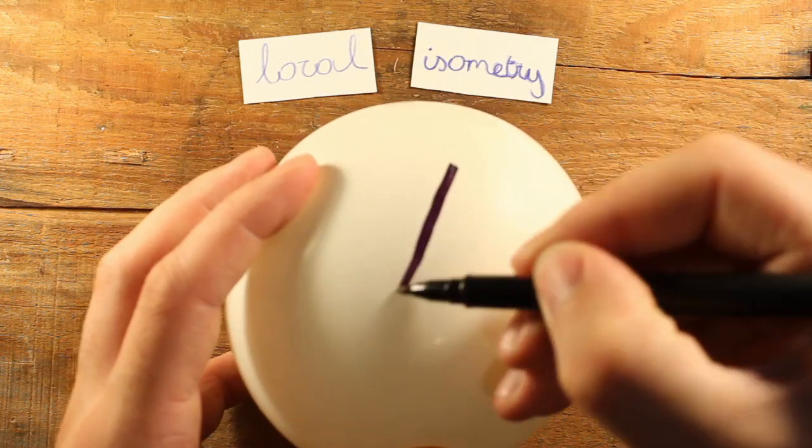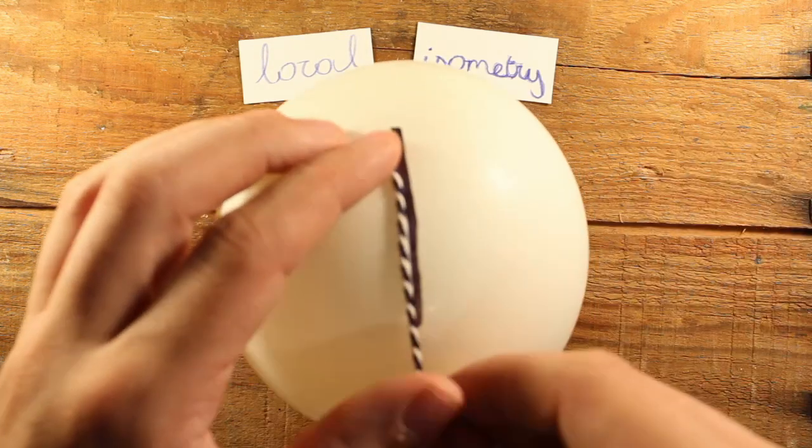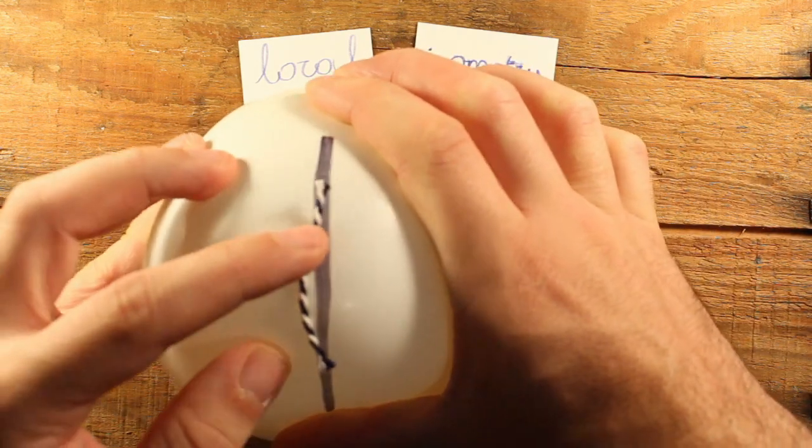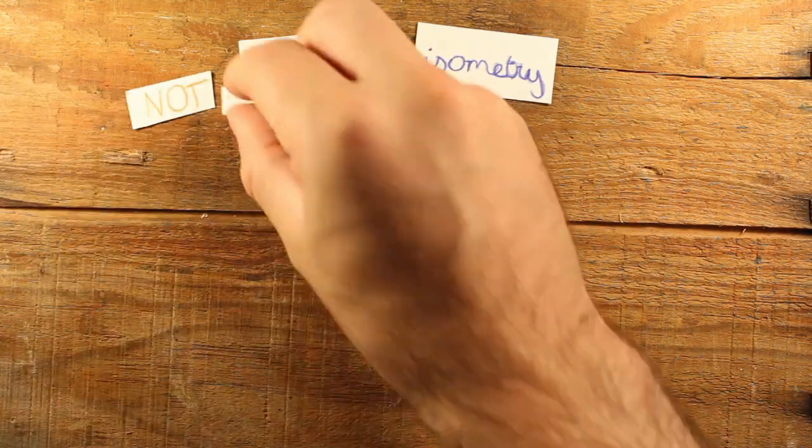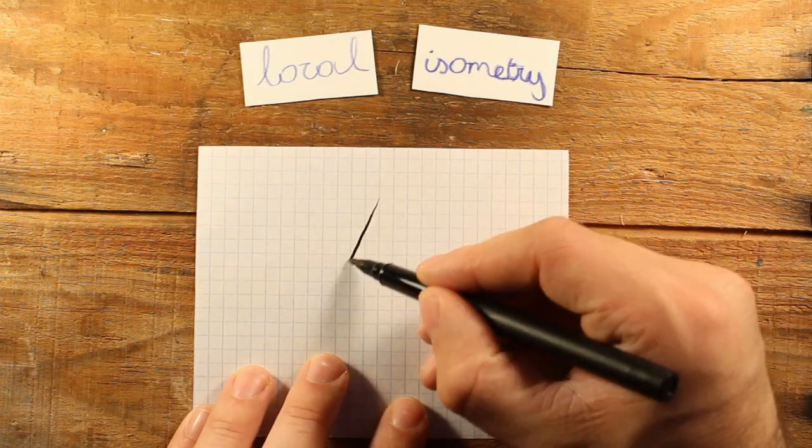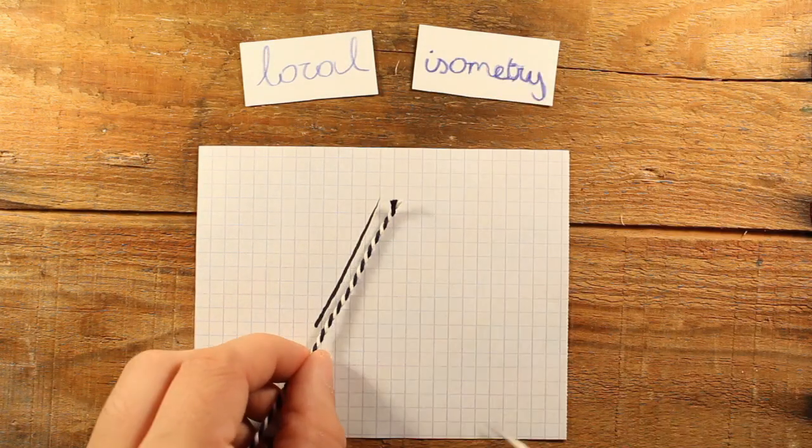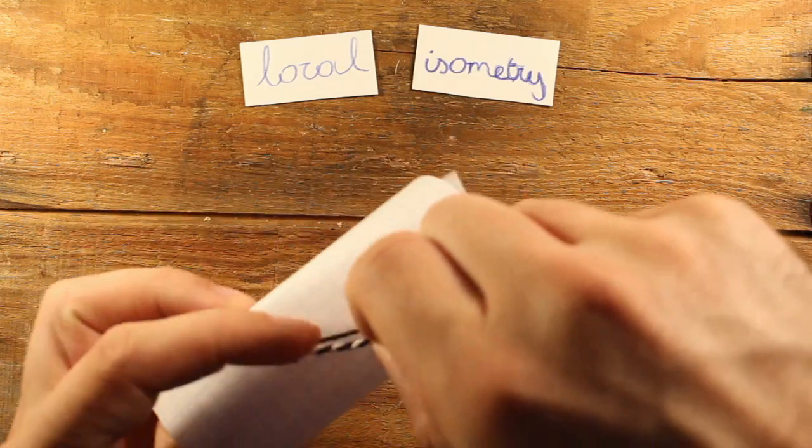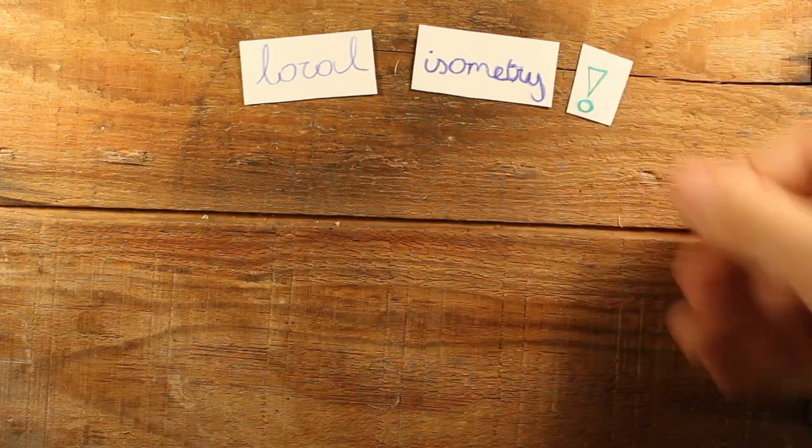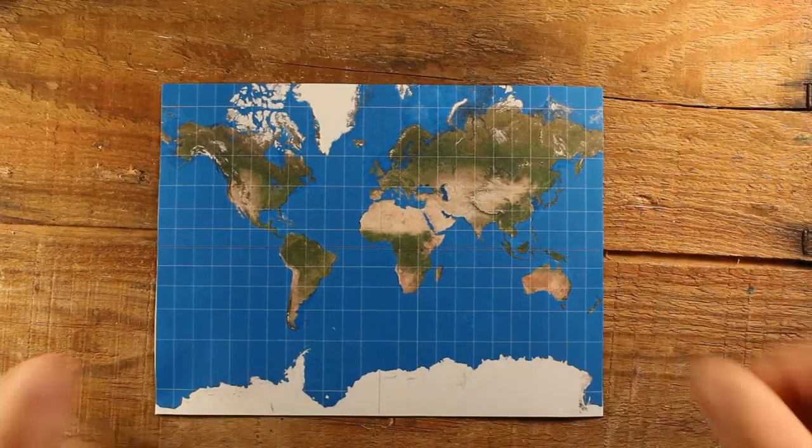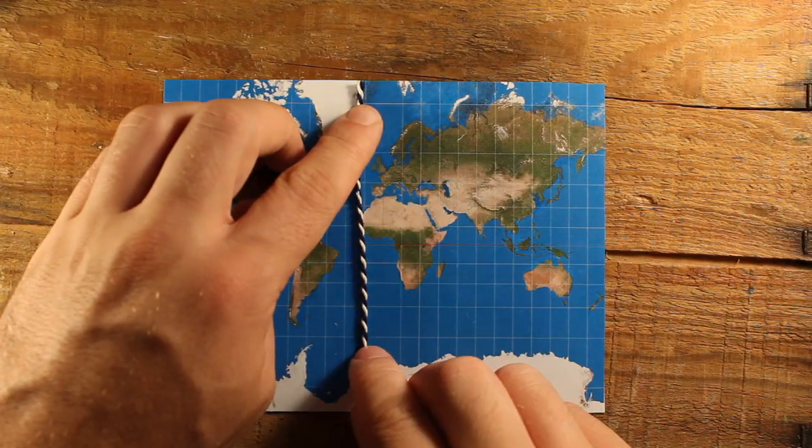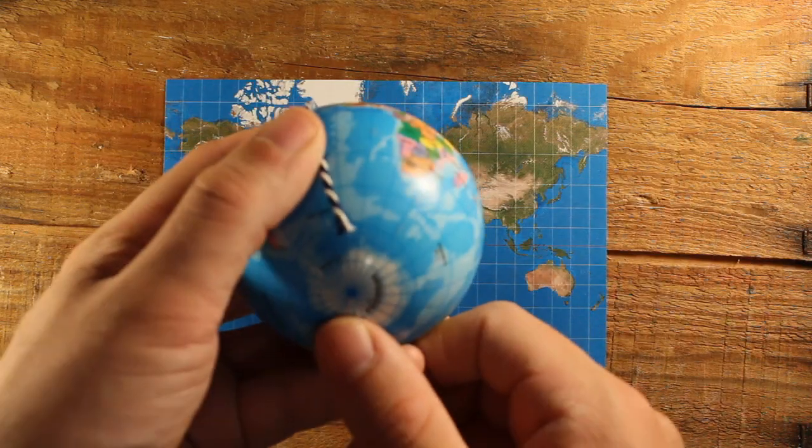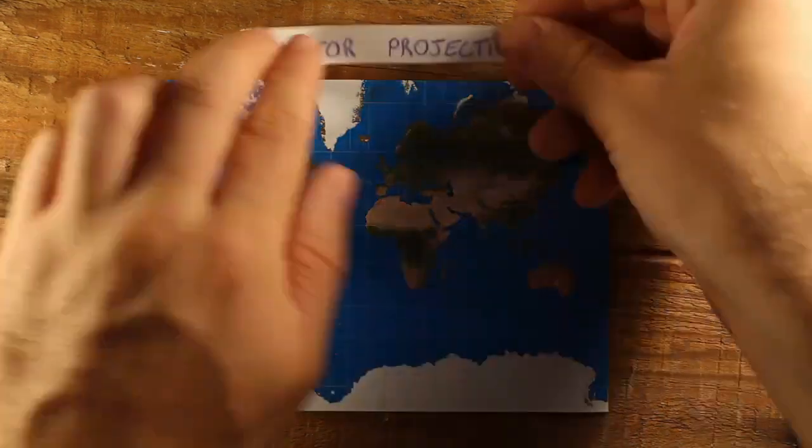And there is a simple criterion to check for this. Draw an arbitrary curve on the surface, measure its length, apply the transformation, and measure the length of the curve again. If the length changes, it's not a local isometry. If it stays constant, and the same is true for every other possible curve, it is. Therefore, bending paper is a local isometry, but stretching a balloon is not. If you think about it, a perfect map should also satisfy this criterion. The length of any path on the map should be proportional to the length of that path on the earth. So a perfect map is a local isometry.